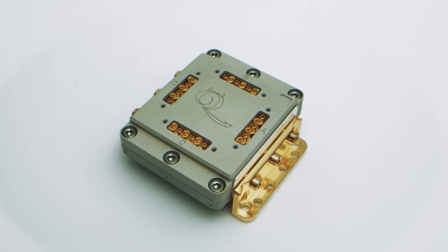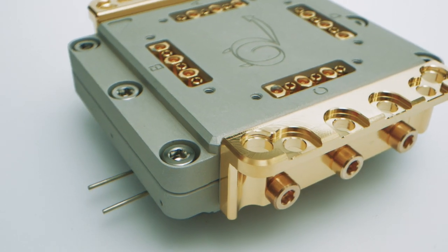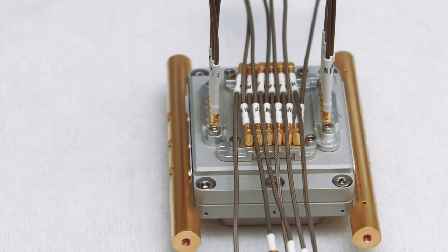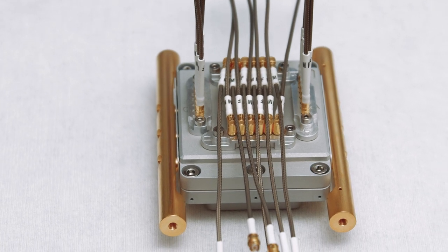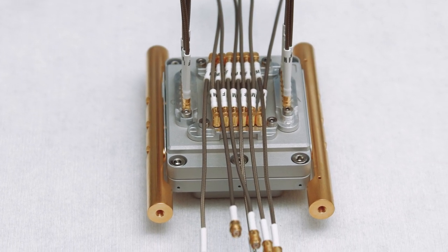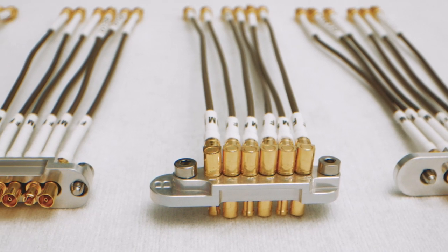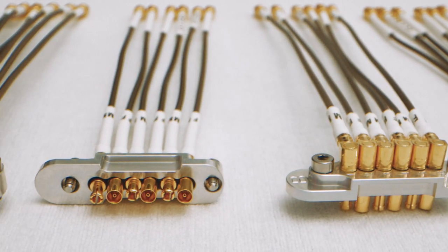The Q-Cage sample holder system has different interface options. Mounting hardware for different dilution fridge models, different cables and connector interfaces, and auxiliary microwave components like bias tees will be possible.